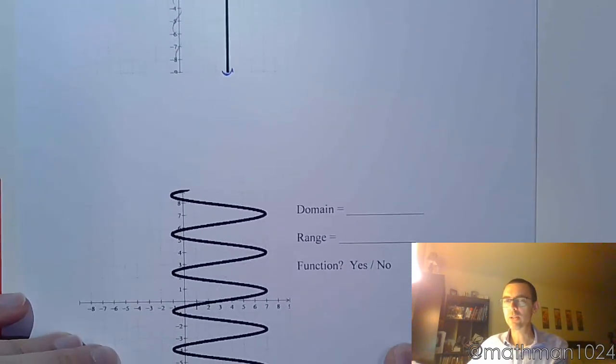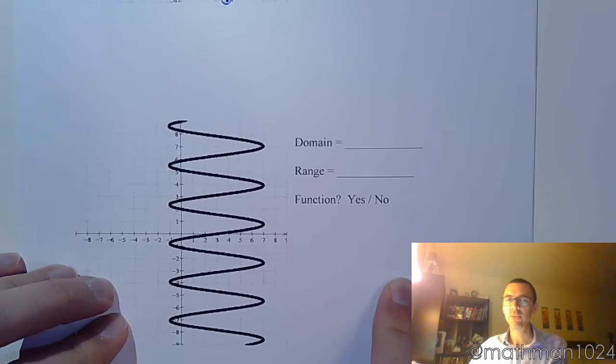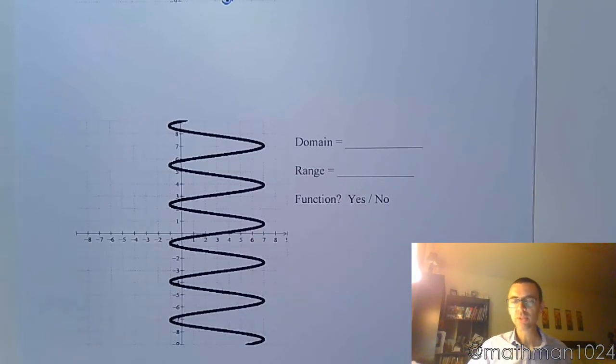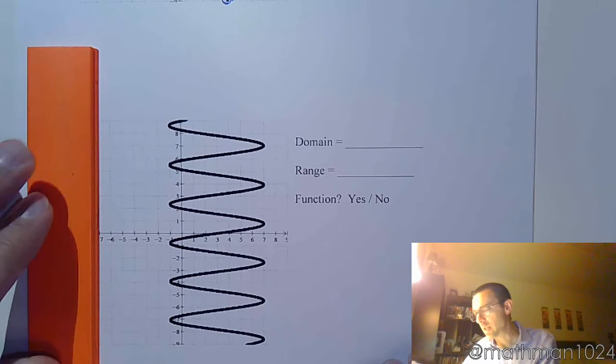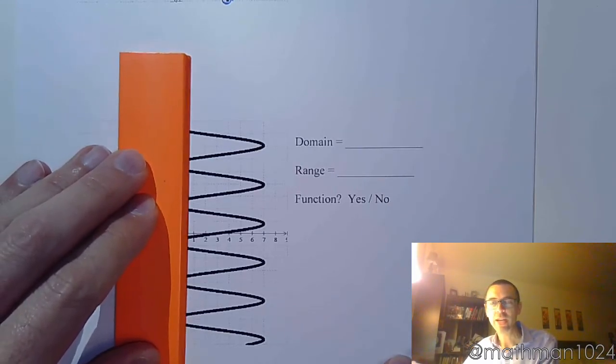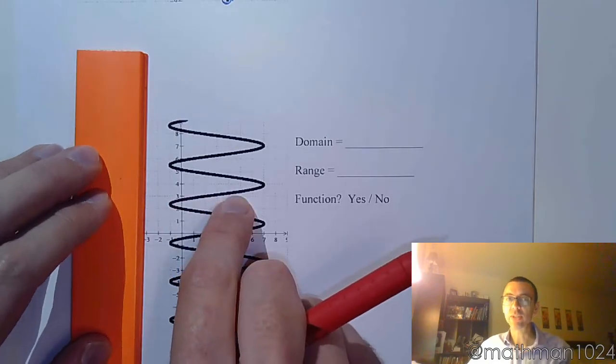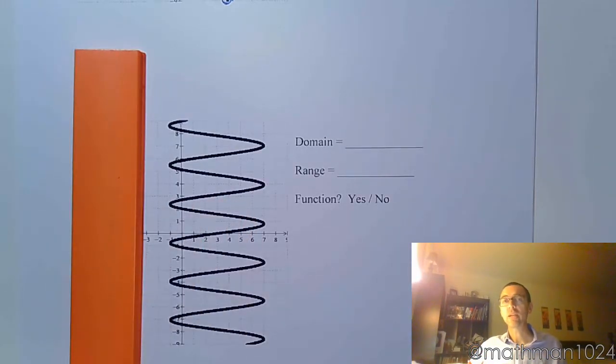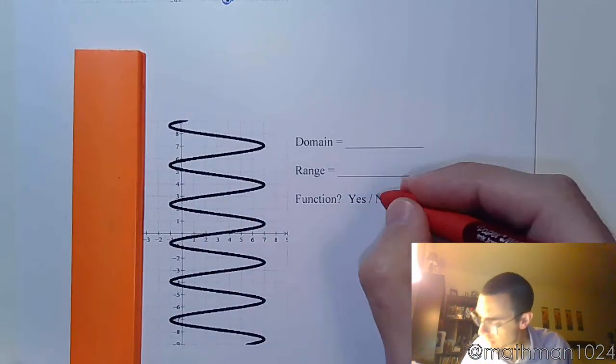All right, this next example - you kind of saw him sneaking in there. Not this - crazy guy. Is this a function, yes or no? Let's see. If I slide my vertical line, everything is fine until I get here, right? And this guy ends up curving back onto itself. And I said that's one of those no-nos - we can't have that guy. So this guy is not a function.